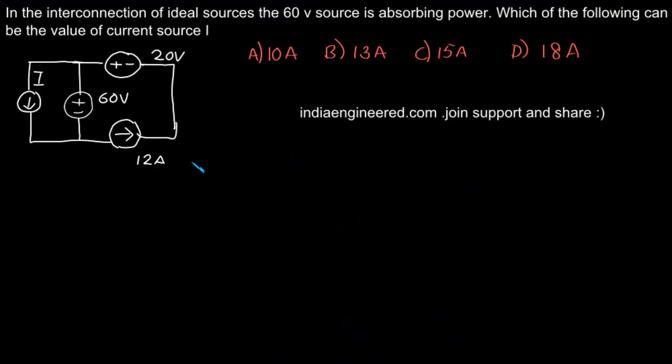This question is from GATE 2009. In the interconnection of ideal sources, the 60 volt source is absorbing power. Which of the following can be the value of current source I? This is a bit tricky question, that's why I have put the options here.